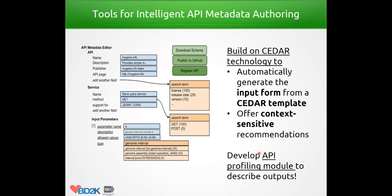One goal is creating a tool to help author metadata, built on top of CEDAR's technology, which already has infrastructure to help with metadata input and auto-completion across controlled vocabularies. We provide an API-specific template to get the metadata-authoring interface. We will also build an API profiling module to describe a specific API's output — for example, what kind of data fields are returned, whether you're providing Ensembl IDs, NCBI gene IDs, or Entrez IDs. Much of this can be guessed automatically from example queries. For fields the profiler can't identify, users can select from a dropdown or type their own annotation for each attribute.